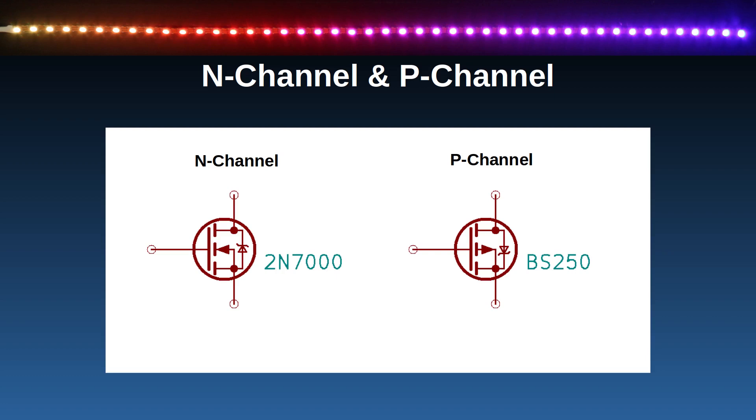Effectively, the P-channel MOSFET is a complement of the N-channel MOSFET. So where the N-channel MOSFET needs a positive voltage at the gate to turn on and zero volts to turn it off, the P-channel is turned on with a negative gate voltage compared to the source drain voltage. I'll be using the N-channel MOSFET in the practical examples.